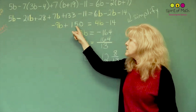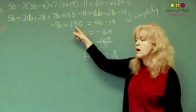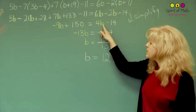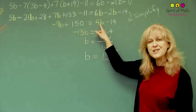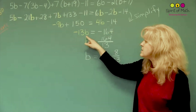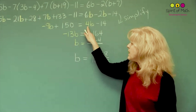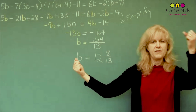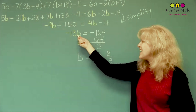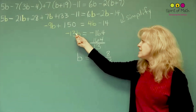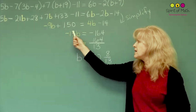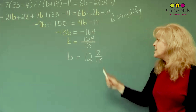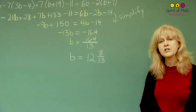Because you have negative 9b plus 150, you want to move the 150 to the other side by doing the opposite — minus 150 — giving you negative 14 minus 150, which is negative 164. You also want to move 4b to the other side, doing the opposite operation, so minus 4b. You end up with negative 9 minus 4, which is negative 13b. Now all you have to do is isolate b: divide both sides by negative 13, the negatives cancel, and you get 164 divided by 13, written as a mixed fraction. And that's it.